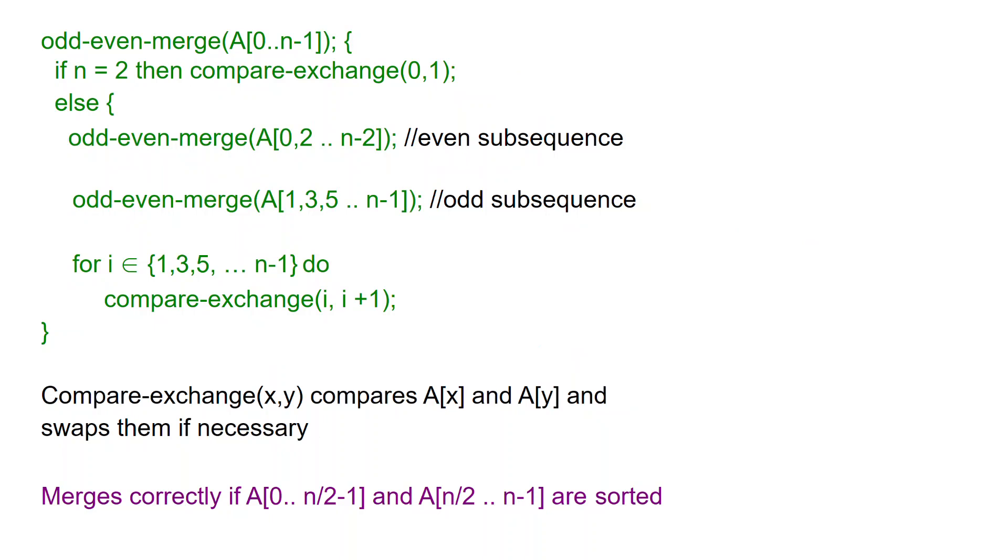Otherwise, we are going to do something very fancy. We are going to look at the even subsequence of a, that's elements 0, 2, 4 and so on all the way to n-2 and we are going to merge those. We are just going to merge the even elements. Then we are going to separately merge the odd elements, a 1, 3, 5 and so on.